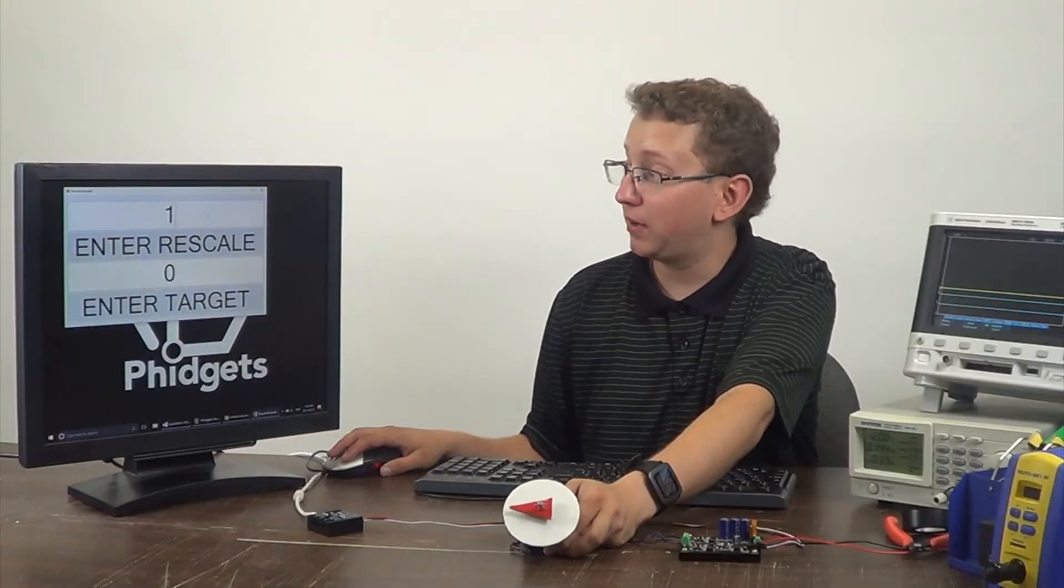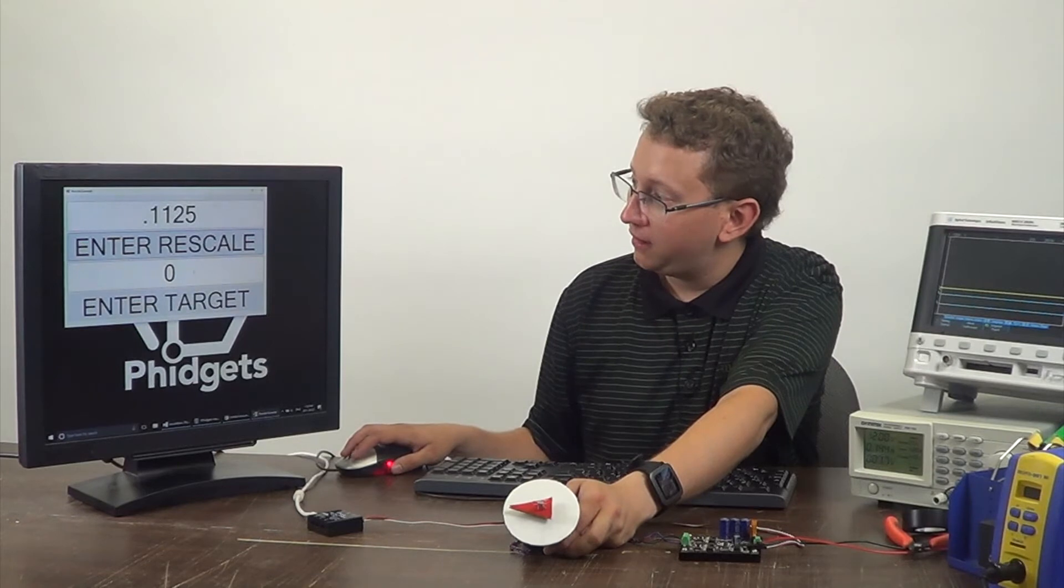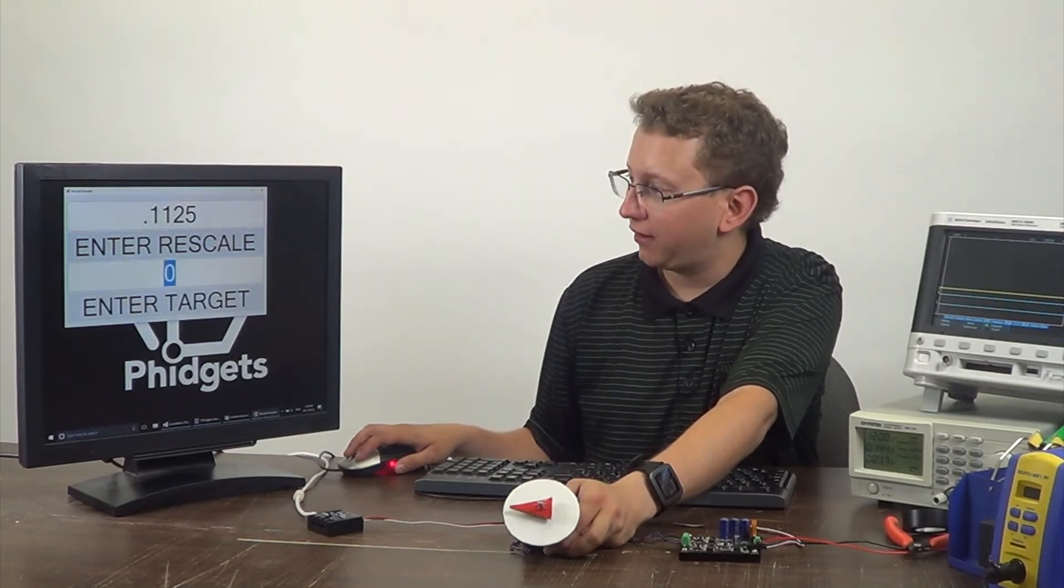So now, I can enter my rescale factor of 0.1125, and my motor units are now in degrees.